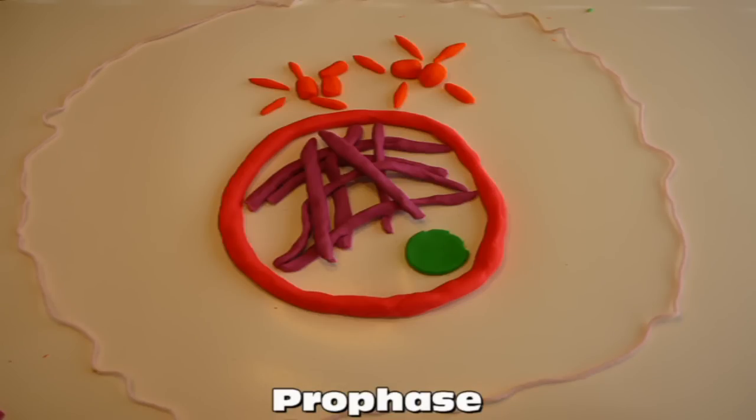Entering prophase, the chromatin inside the nucleus coils together forming chromosomes that are each made of two sister chromatids which are connected to a centromere. Also, the nucleoli disappear. In the cytoplasm, the early mitotic spindle begins to form as microtubules grow from the centrosomes.